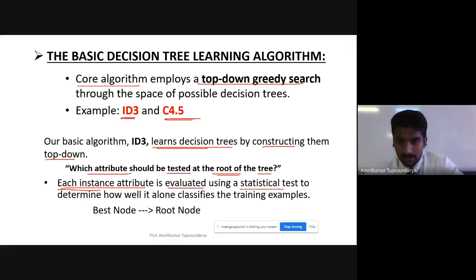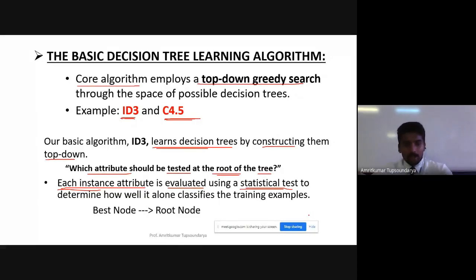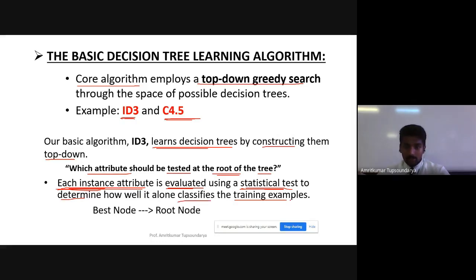To identify the root attribute, each instance of the attribute is evaluated using statistical tests. Machine learning is a combination of coding and mathematics. The relevant mathematical domains include statistical probability and some calculus. The statistical test determines how well that individual instance attribute alone is able to classify the training examples.